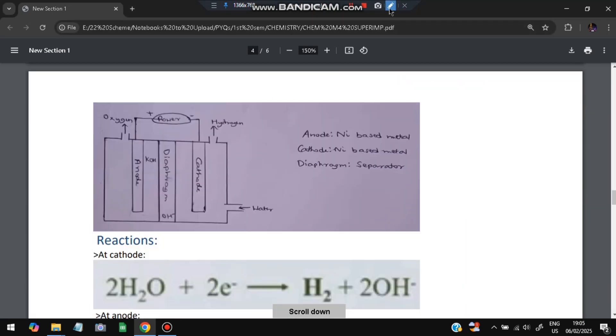You have to make the anode as the Ni based metal and the cathode also Ni based metal. In between we have KOH and OH minus is the diagram. In between this is the oxygen and this is hydrogen. Oxygen comes from the anode side and the cathode side emits hydrogen and the water is inserted from here. There is a power source here.